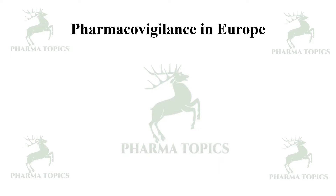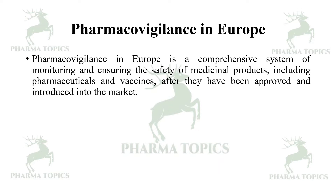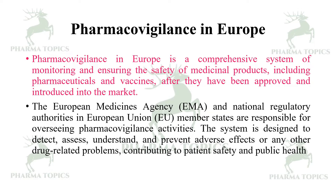Pharmacovigilance in Europe is a comprehensive system of monitoring and ensuring the safety of medicinal products, including pharmaceuticals and vaccines, after they have been approved and introduced into the market. The European Medicines Agency and national regulatory authorities in the EU member states are responsible for overseeing pharmacovigilance activities. The system is designed to detect, assess, understand, and prevent adverse events or any other drug-related problems, contributing to patient safety and public health.